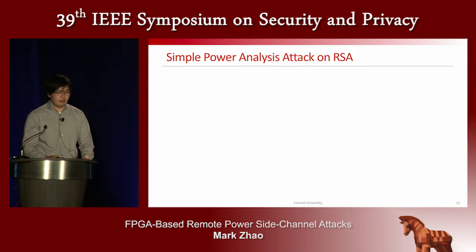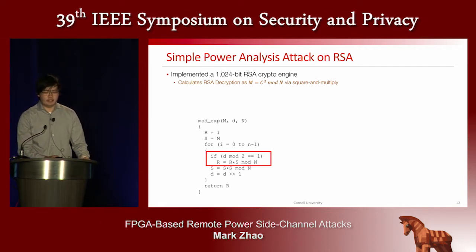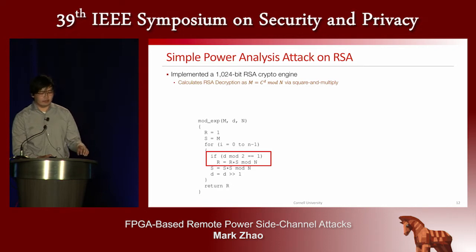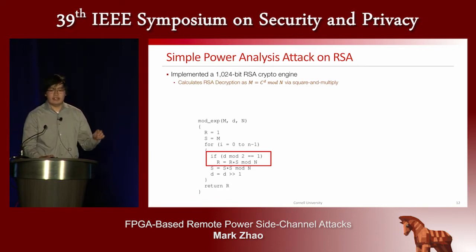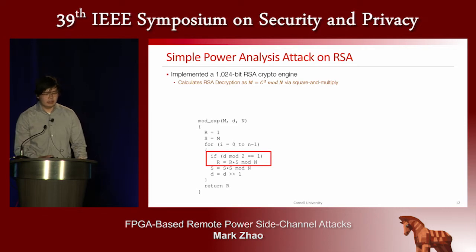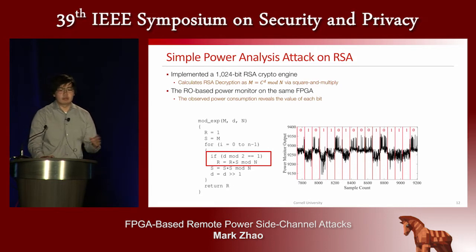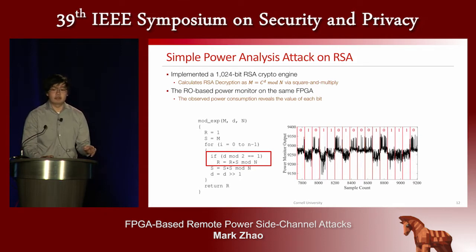To make this concrete, we implement a 1024-bit RSA crypto engine on the FPGA using a square-and-multiply algorithm. Square-and-multiply iterates through all 1024 key bits in a for loop. The key observation is that when the conditional is true, the module has two multipliers computing simultaneously. When false, only one multiplier runs — meaning less power is consumed. Running this on the FPGA and recording a power trace with our ring oscillators makes every round of the RSA decryption visible.